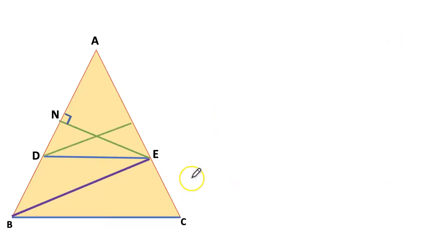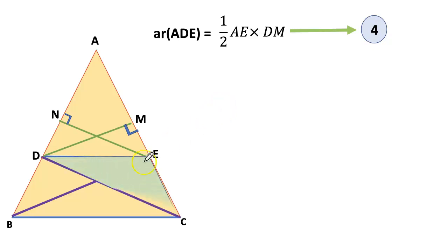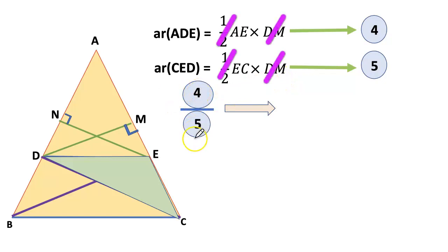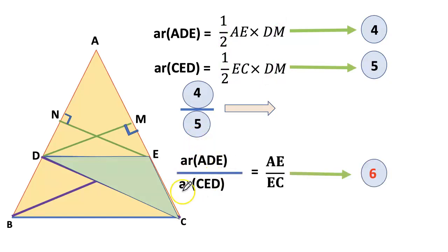Now, drop DM perpendicular to AC. Let us find here. Area of ADE equals half into base into height. Height here it is DM. Then join DC. The triangle CED area equals half into EC into DM. Divide equation number four by equation number five. So we get area of ADE by area of CED equals AE divided by EC.